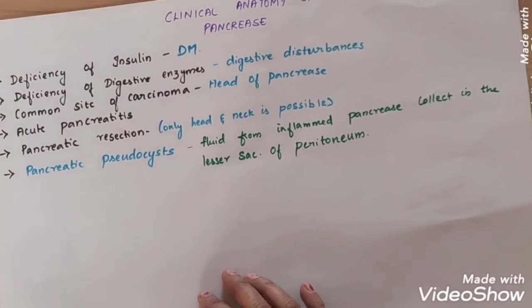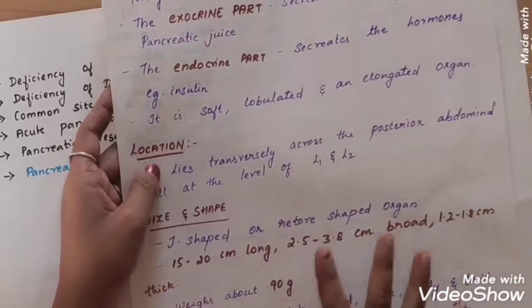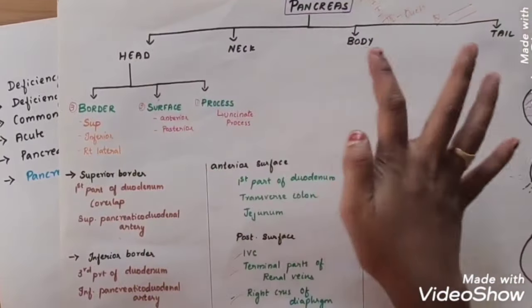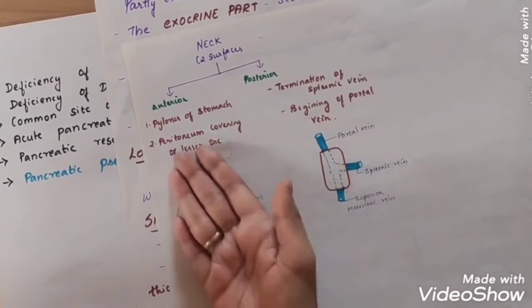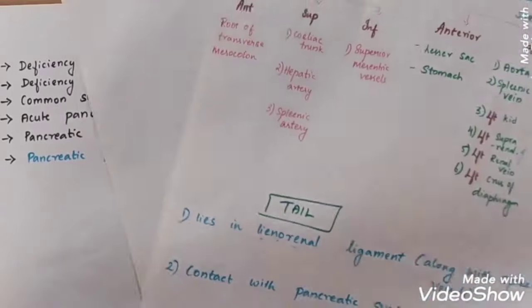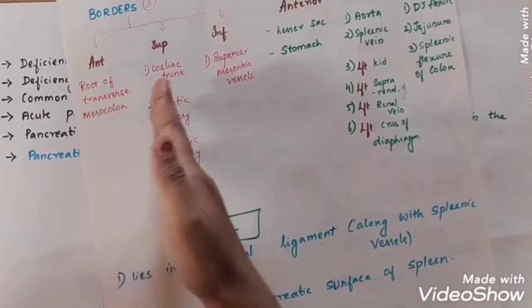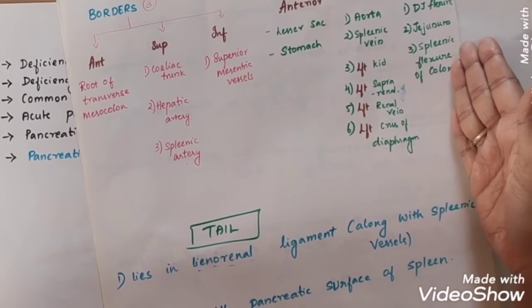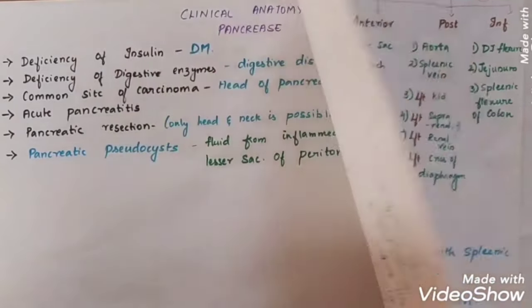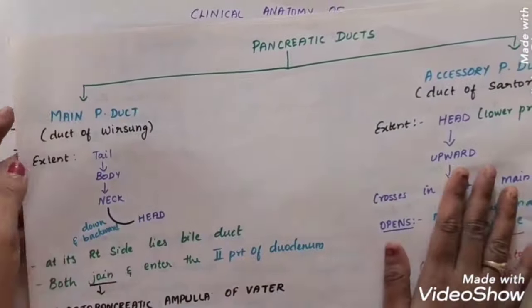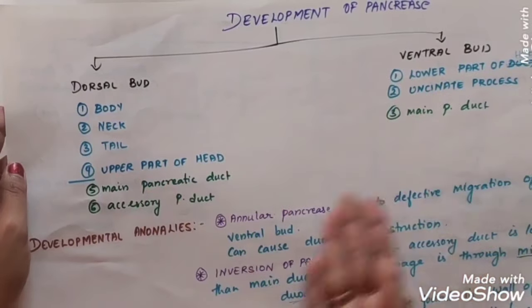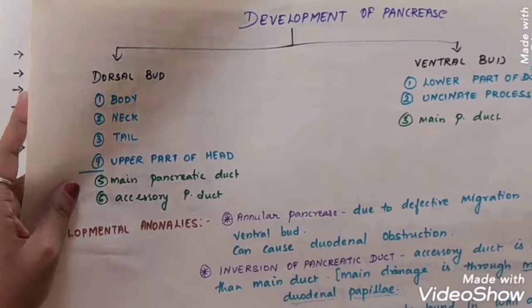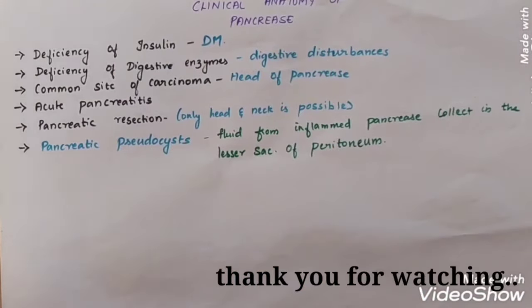This is all about the pancreas — the location, size, and shape. The pancreas has a head, neck, and tail. The head has three borders and two surfaces. The neck has anterior and posterior surfaces. The body is cut in a triangular shape with anterior, superior, and inferior borders, and anterior, posterior, and inferior surfaces. Next is the duct system: what is the main duct and what is the accessory duct. Then development — from the dorsal bud and ventral bud the structure is developed, and there is an anomaly which can cause problems. Then clinical anatomy points. This is all about the pancreas.